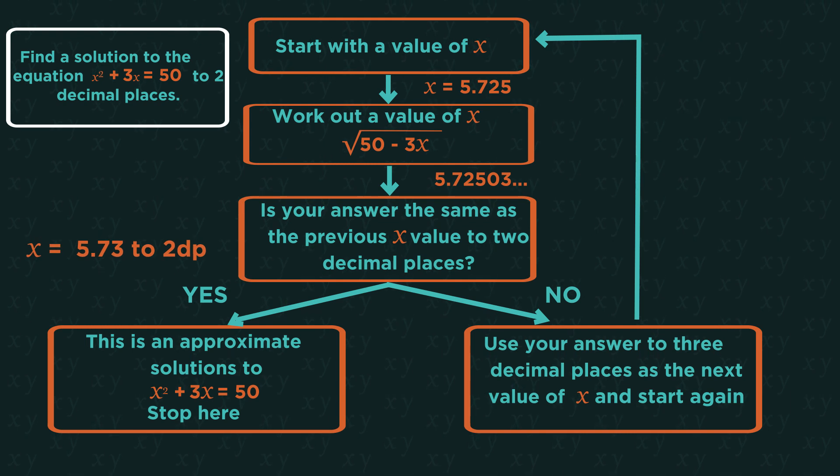Rounded to two decimal places, 5.73 went in and 5.73 came out. The answer is 5.73. So that's how iteration works. It's a repeated cycle.